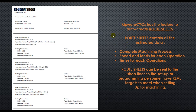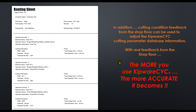Kipware CYC has the feature to auto-create routing sheets. Route sheets contain all the estimate data, the complete machining process, speeds and feeds for each operation, and the times for each operation. These route sheets can then be sent to the shop floor so setup or programming personnel have real targets to meet when setting up for machining. In addition, cutting condition feedback from the shop floor can be used to adjust the CYC cutting parameter database. With that real feedback coming from the shop floor, the more you use Kipware CYC, the more accurate it becomes.